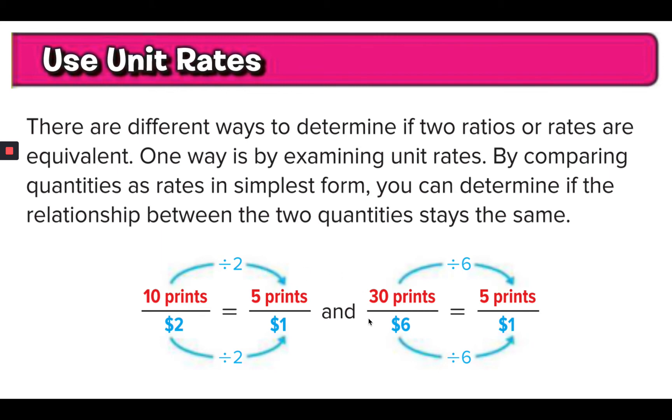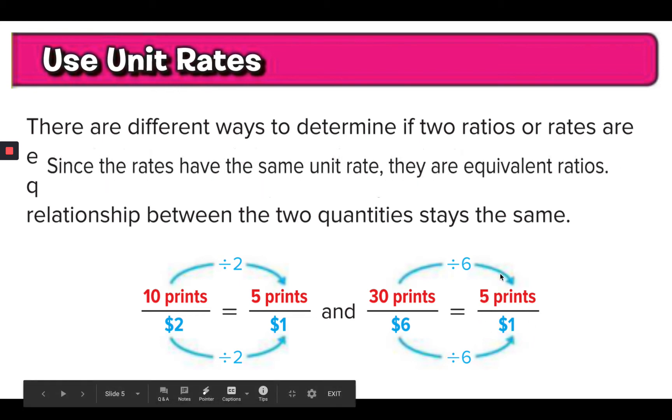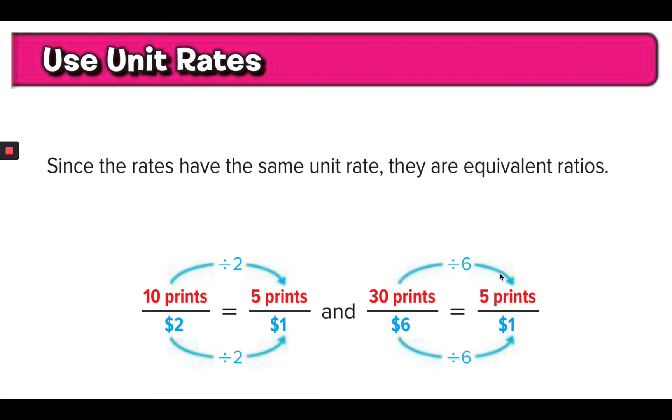And when you look at 30 prints for $6, you change that into a unit rate. Again, a unit rate is over 1 by dividing both the top and the bottom by 6. And now you have 5 prints for $1. So yes, these are equivalent ratios.